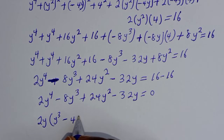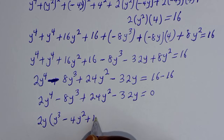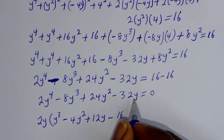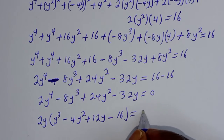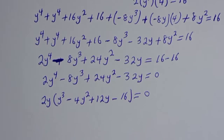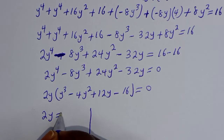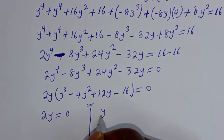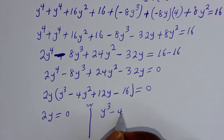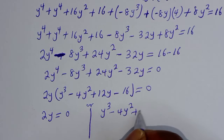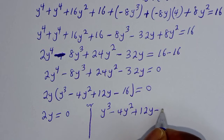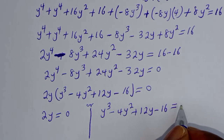Dividing through, we get 2y times (y³ minus 4y² plus 12y minus 16) equals 0. From here there are two cases: the first case is 2y equals 0, or the second case is y³ minus 4y² plus 12y minus 16 equals 0.